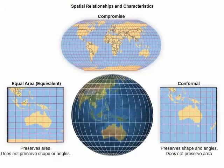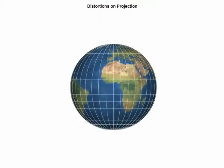For example, maps that attempt to provide a visual balance of all the characteristics are called compromise projections. They do not preserve any specific characteristic. When a map projection preserves one spatial characteristic, all other spatial characteristics are distorted.